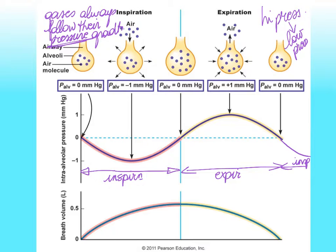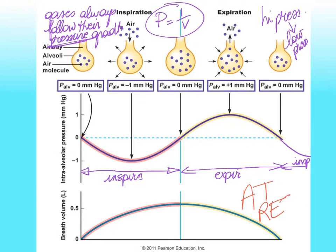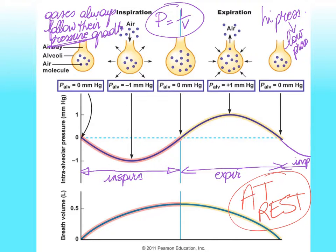In the next video, we'll see how exactly we change these pressures inside of the alveoli. It all has to do with which muscles we use at which time to either increase or decrease the volume of our thoracic cavity, because according to Boyle's Law the pressure of a gas is inversely related to its volume. One more important piece of information: on this second graph, we see the amount in liters of air we move at rest. At rest we move about half a liter of air maximum.